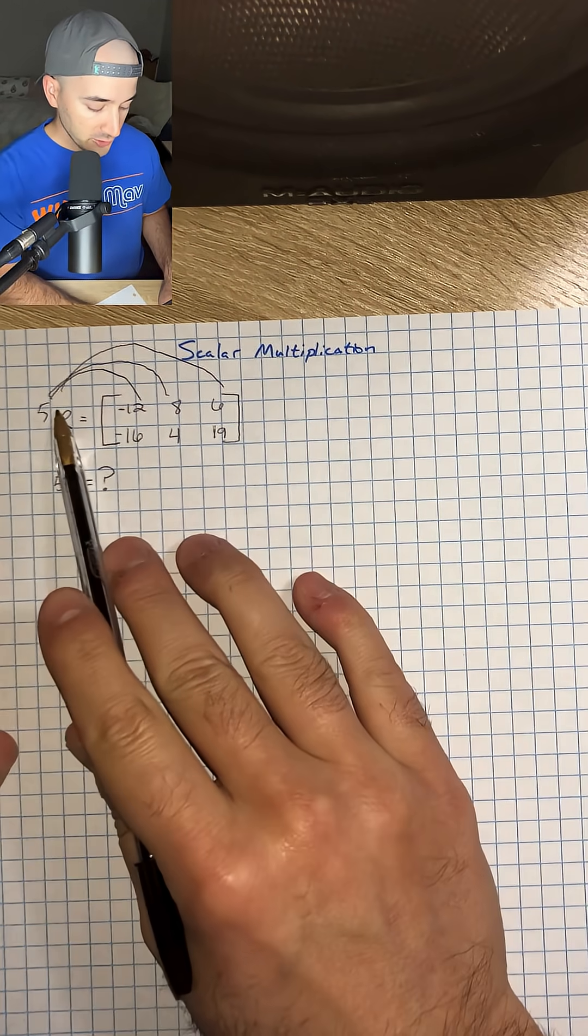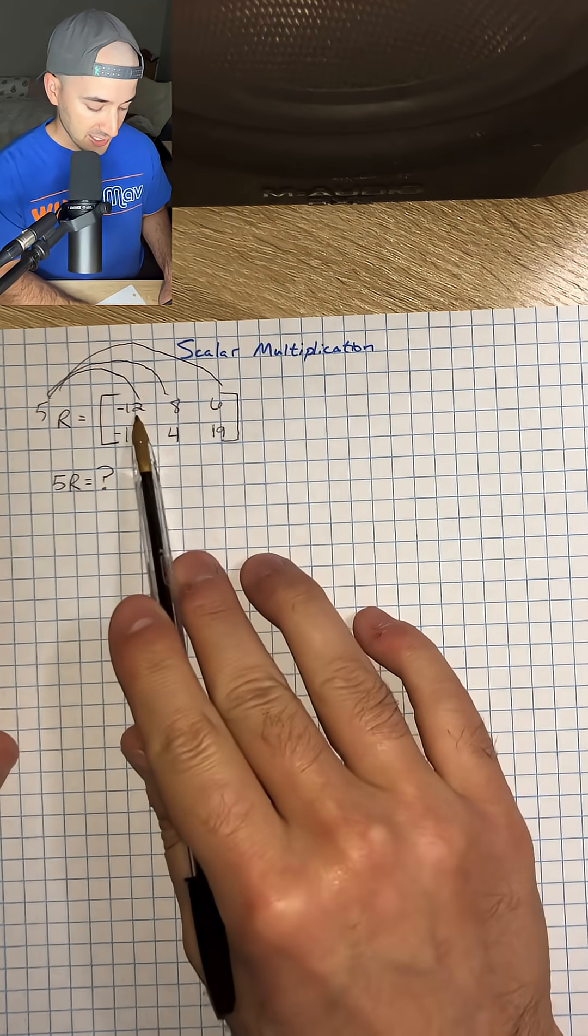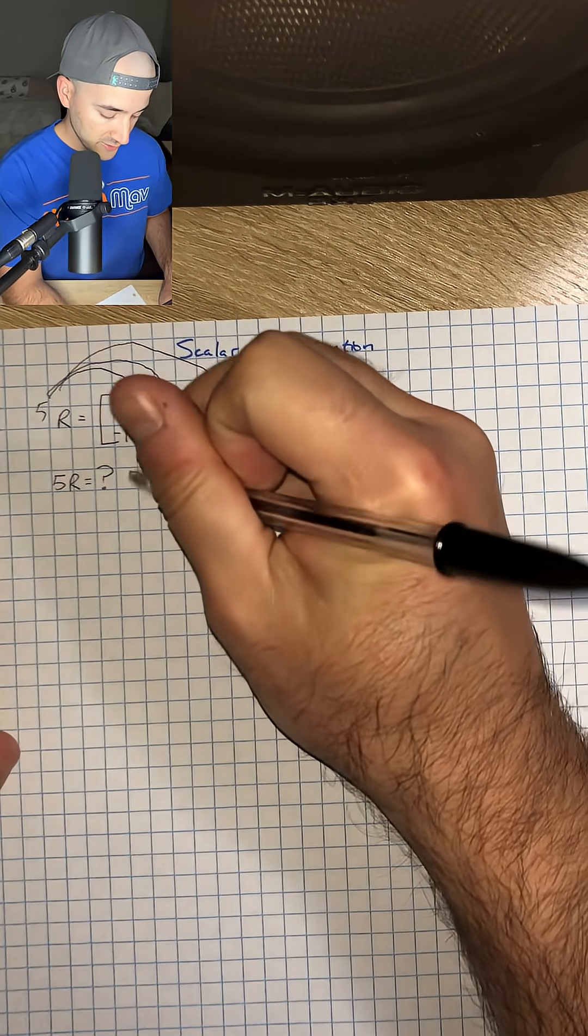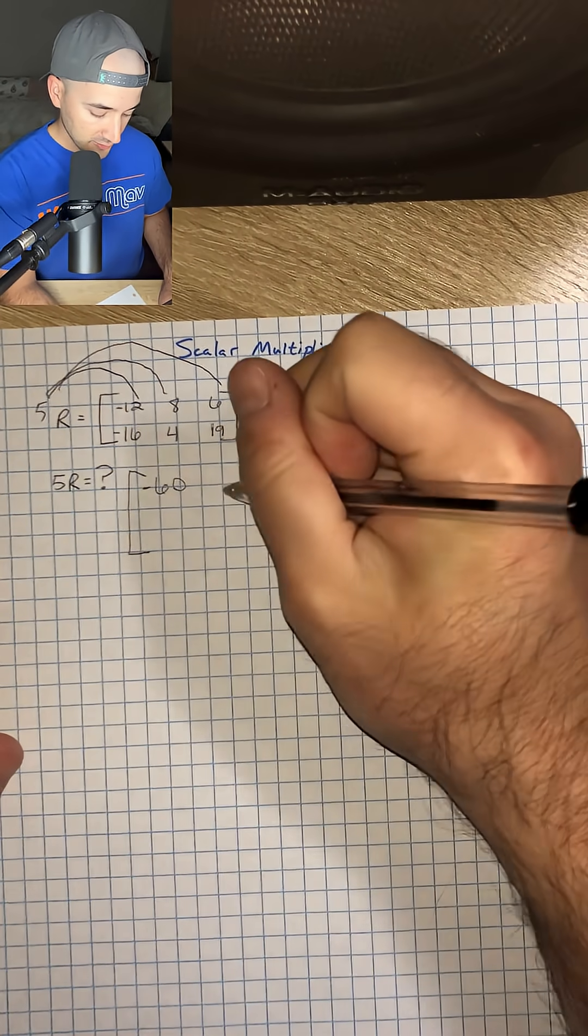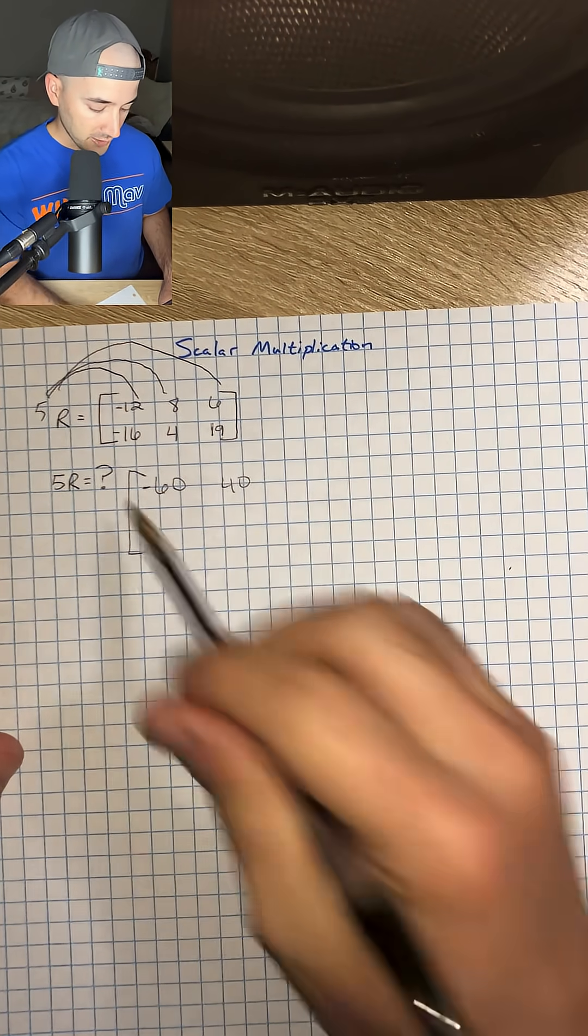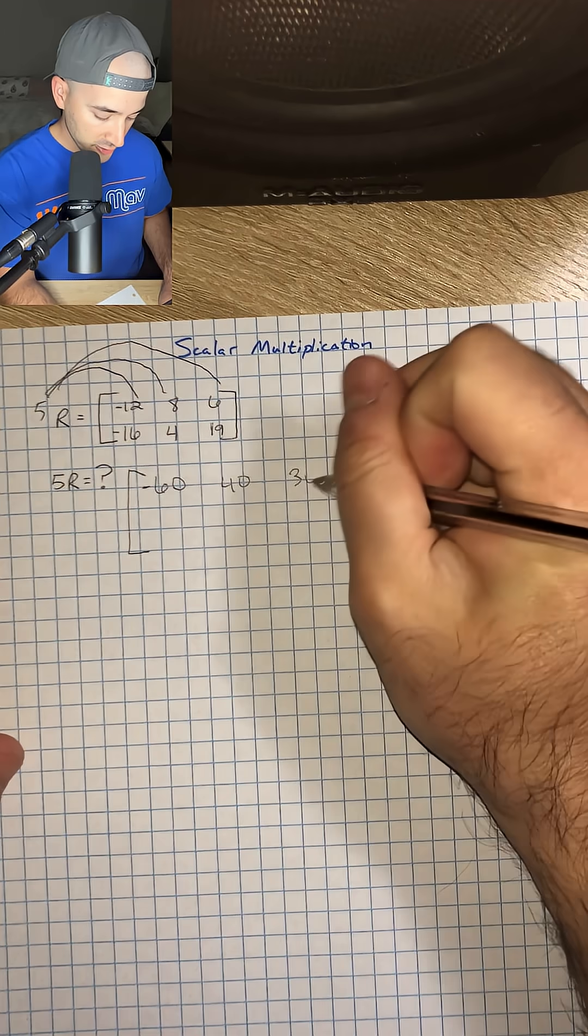When we do that, we're going to get 5 times negative 12, which is negative 60. 5 times 8 is positive 40, and then 5 times 6 is positive 30.